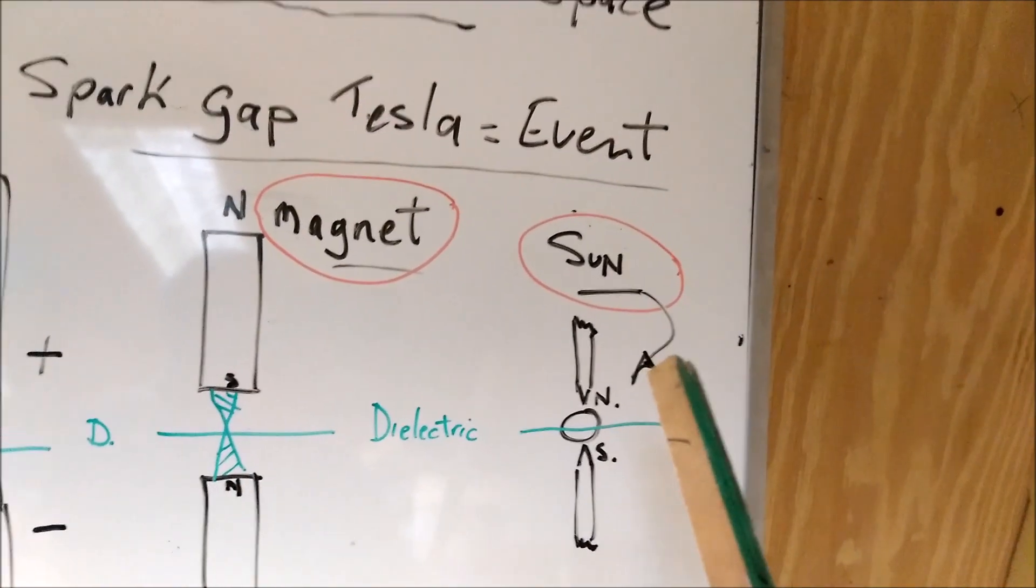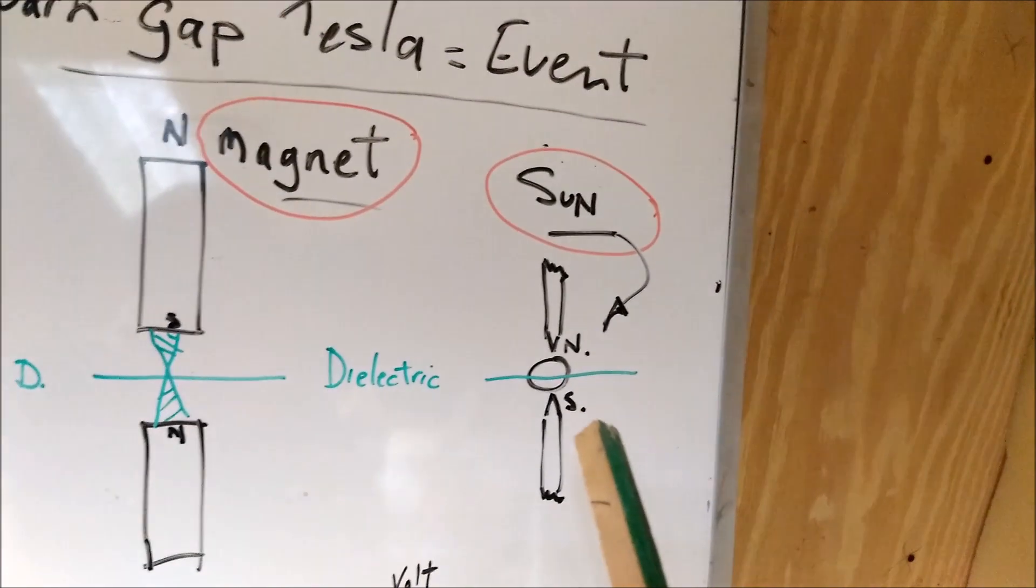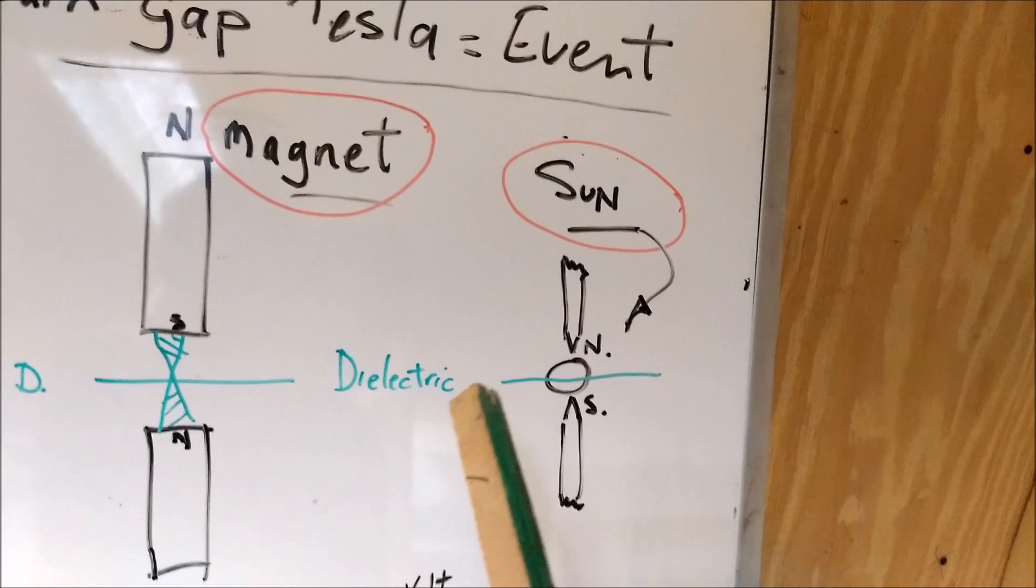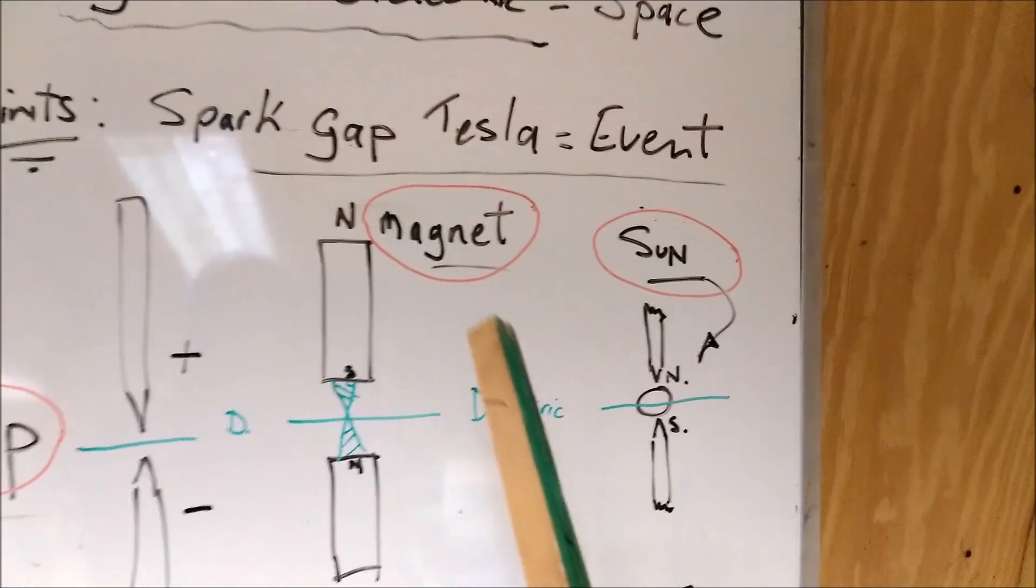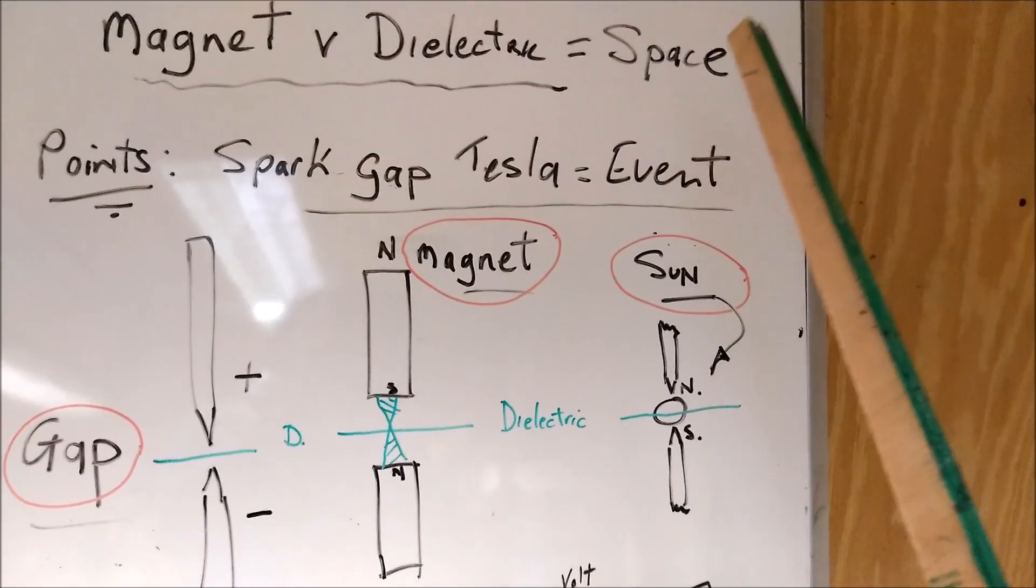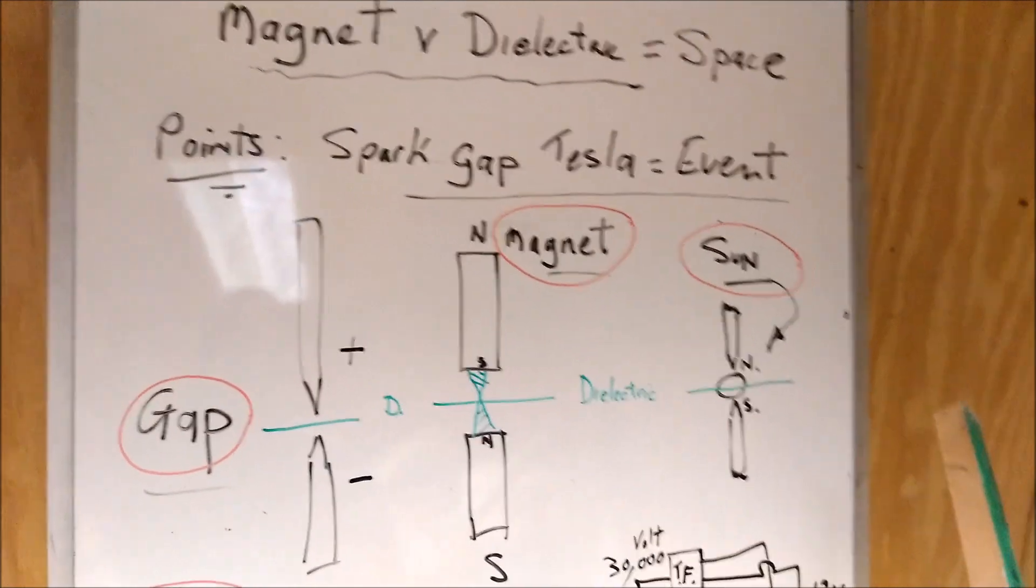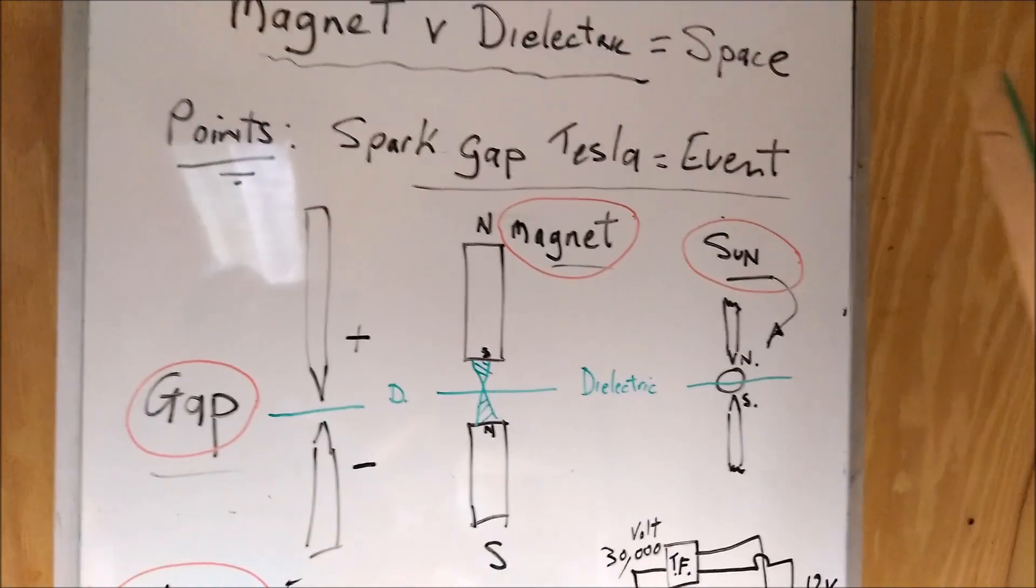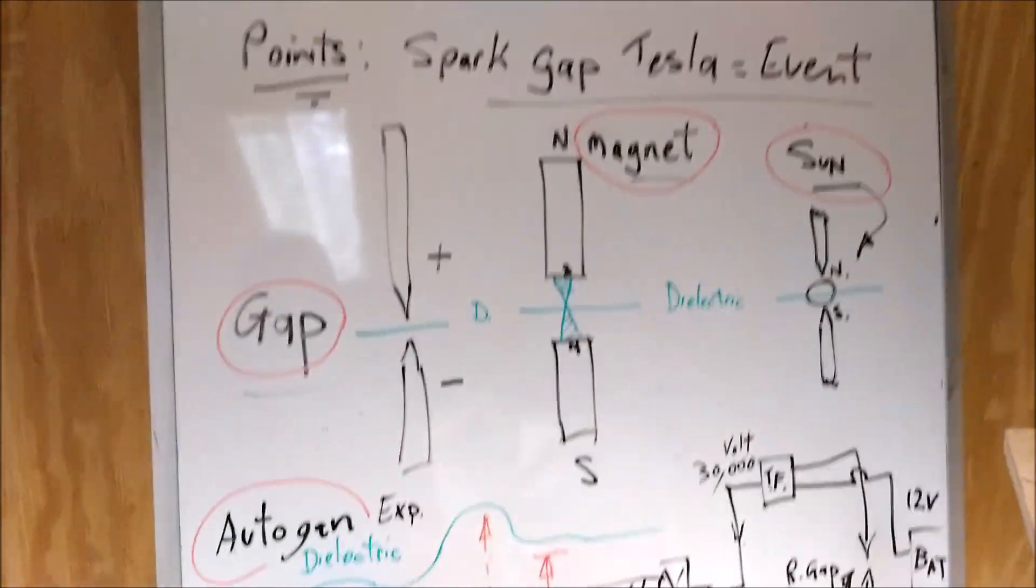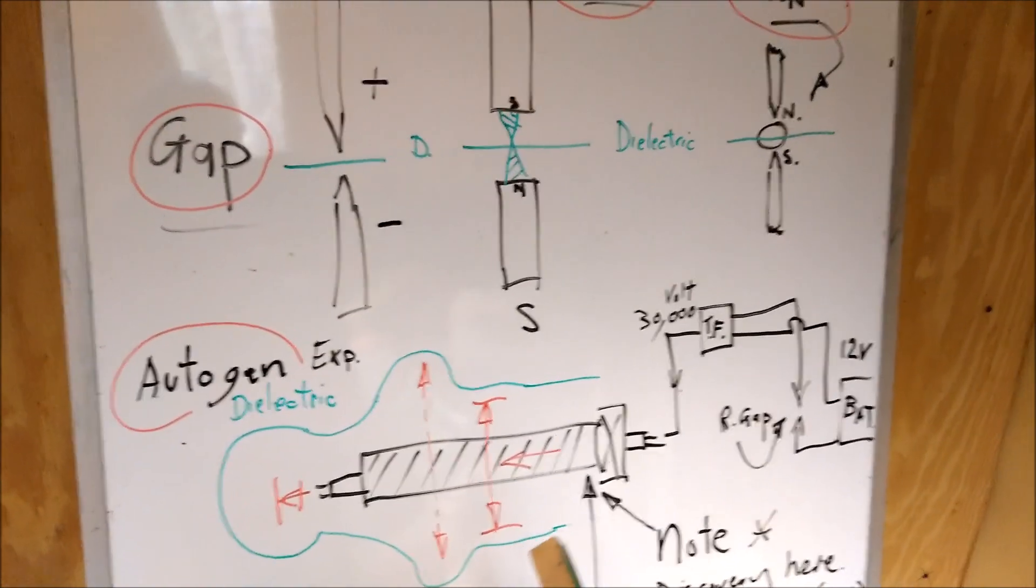You know, our sun has got a north pole and a south pole magnetically, and it also must have a dielectric as well. So I'm looking at the dielectric being space. So the two components really in space are dielectric and magnetic. There's just two components, and I've made a discovery with the machine on the bench.